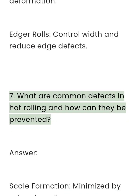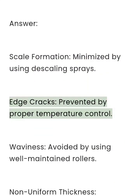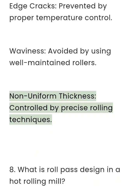Question 7: What are common defects in hot rolling and how can they be prevented? Answer: Scale formation — minimized by using descaling sprays. Edge cracks — prevented by proper temperature control. Waviness — avoided by using well-maintained rollers. Non-uniform thickness — controlled by precise rolling techniques.